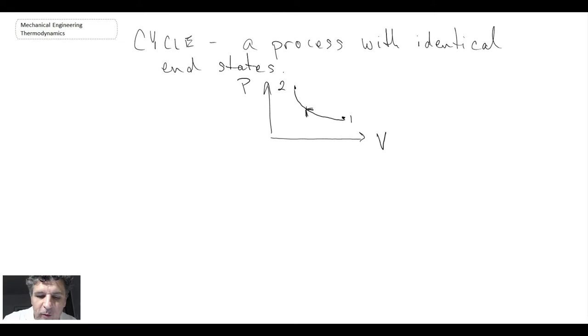Now with the cycle what happens is we'll have another process path that connects the two same end states and so here you can see it loops around and that would be in the form of a cycle. So that's a very simple cycle but it would define a cycle that we will look at throughout thermodynamics.